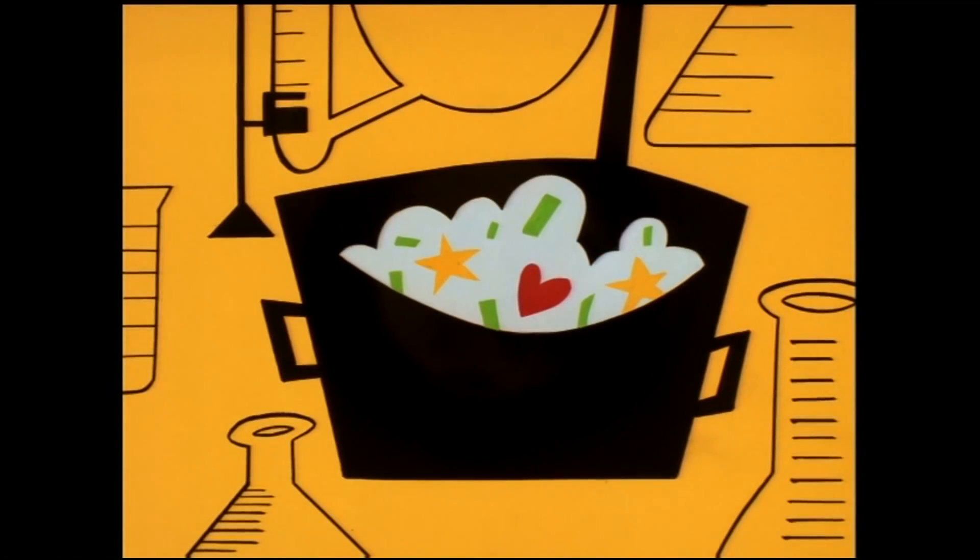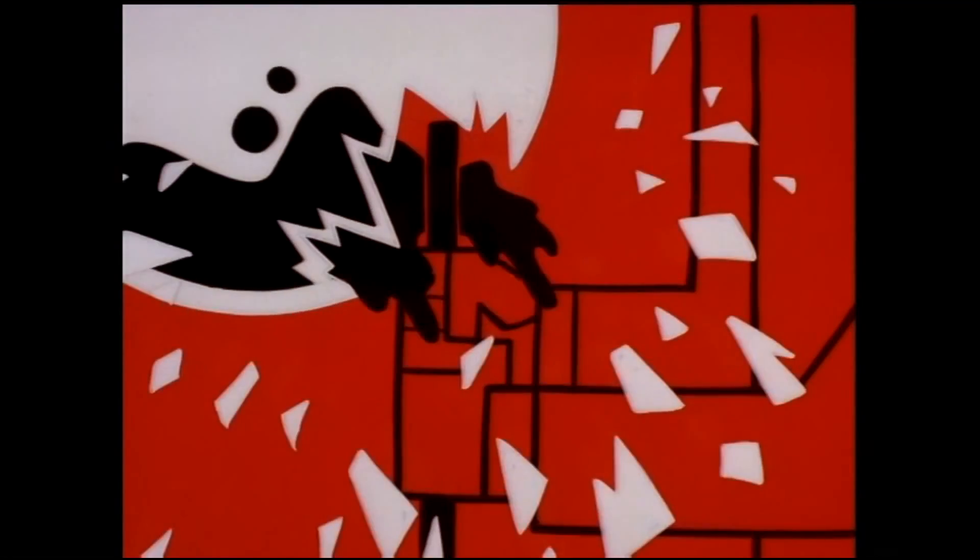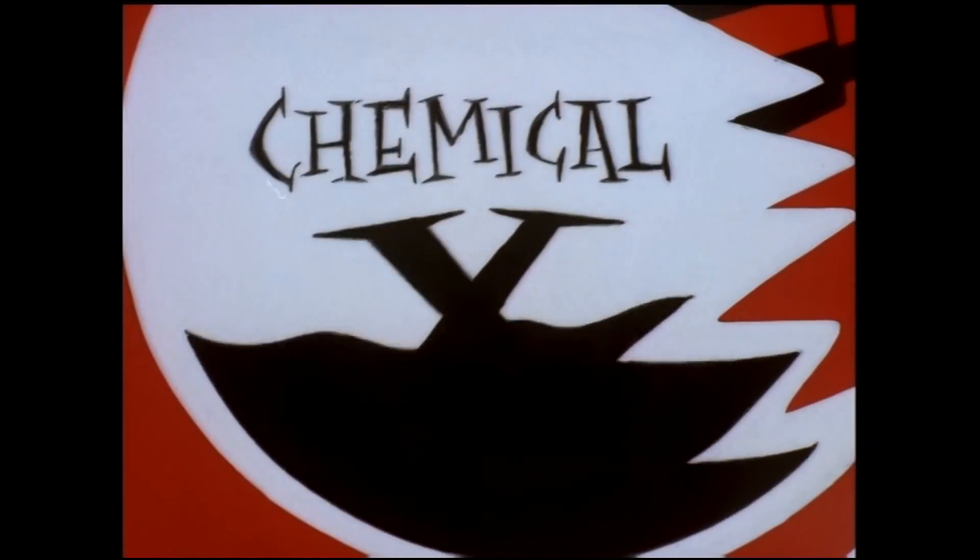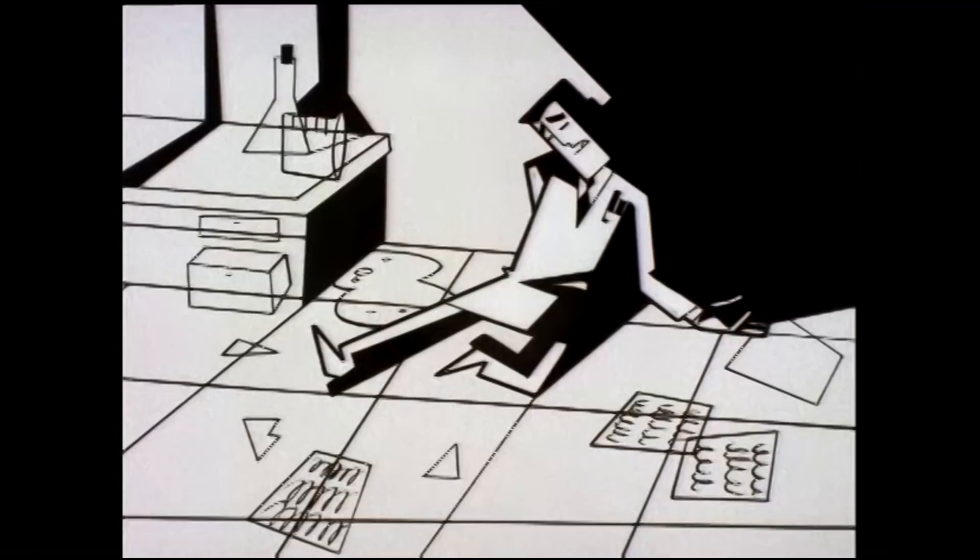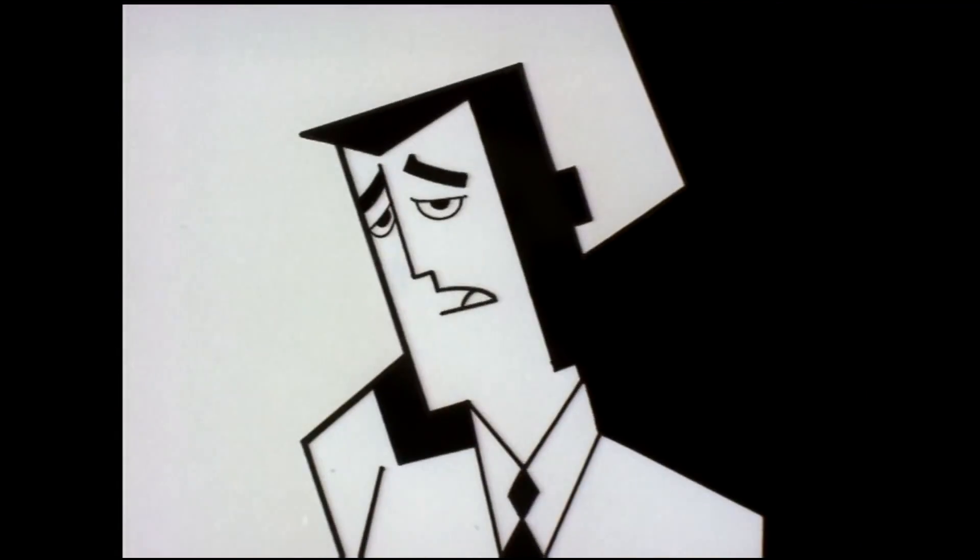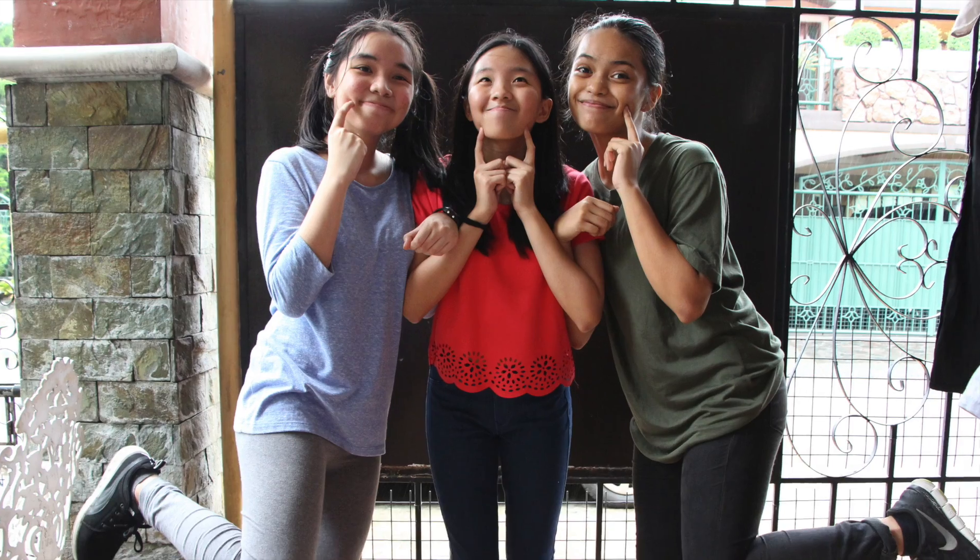Sugar, spice, and everything nice. These were the ingredients chosen to create the perfect little girl. But Professor Utonium accidentally added an extra ingredient to the concoction, Chemical X. Thus the Powerpuff Girls were born!